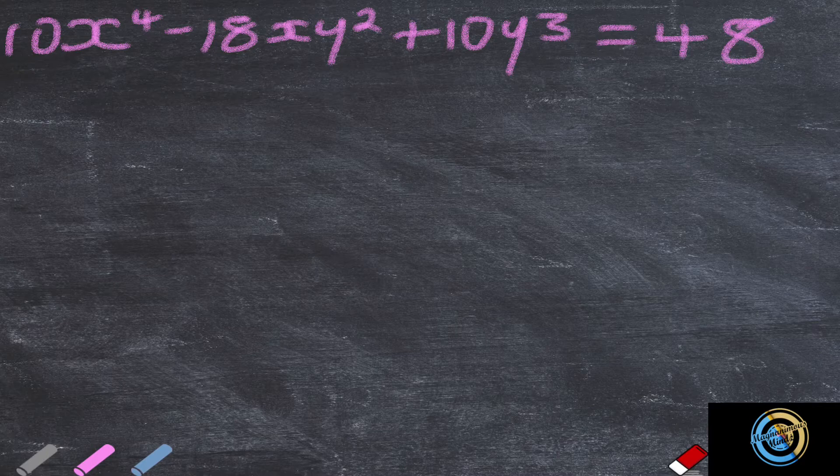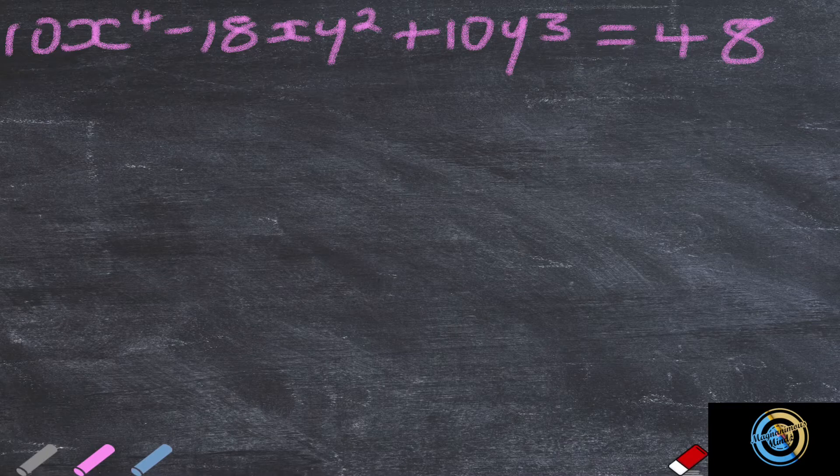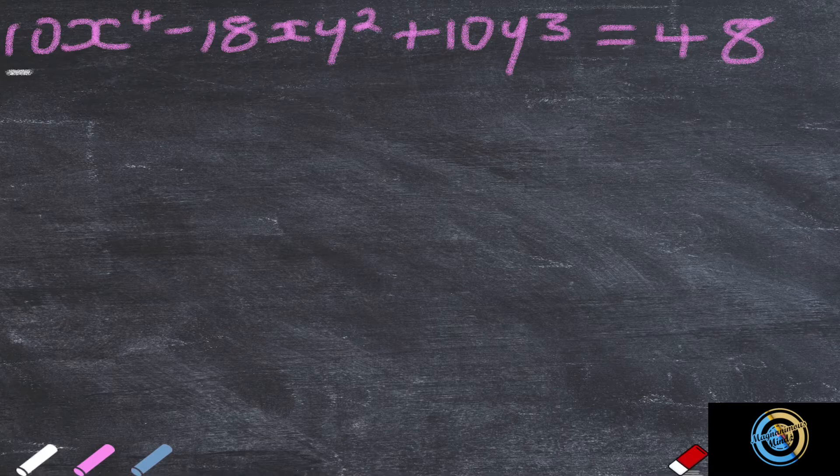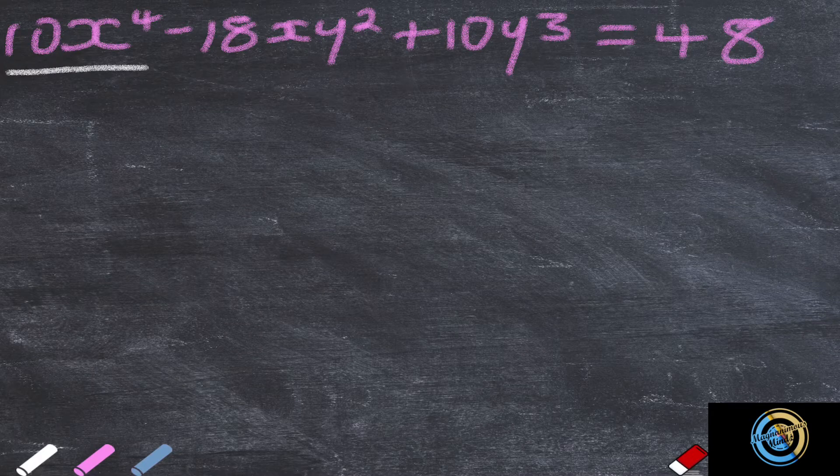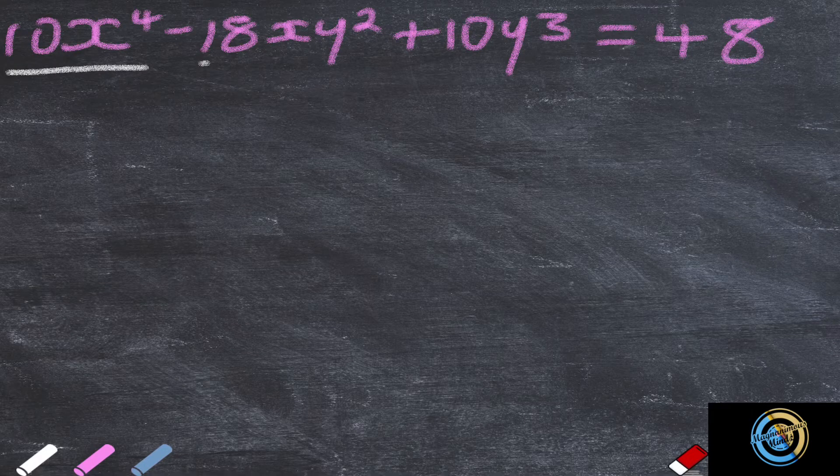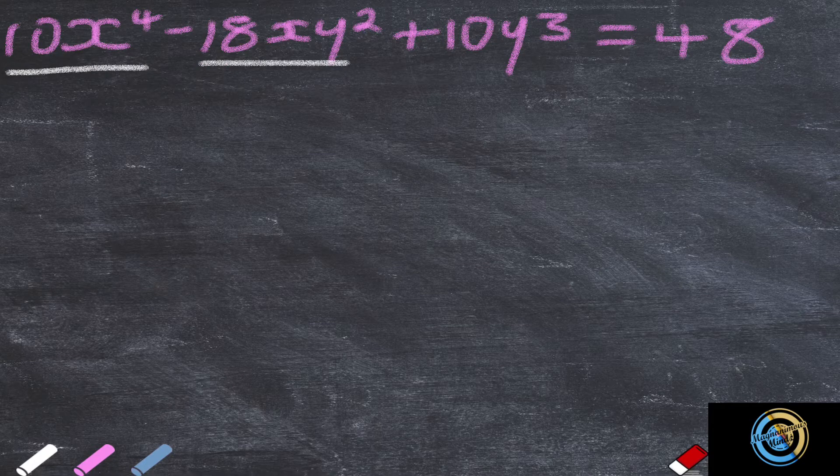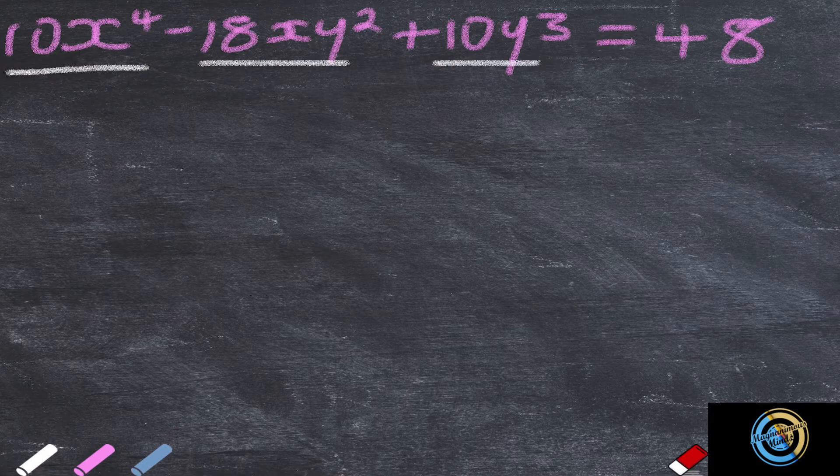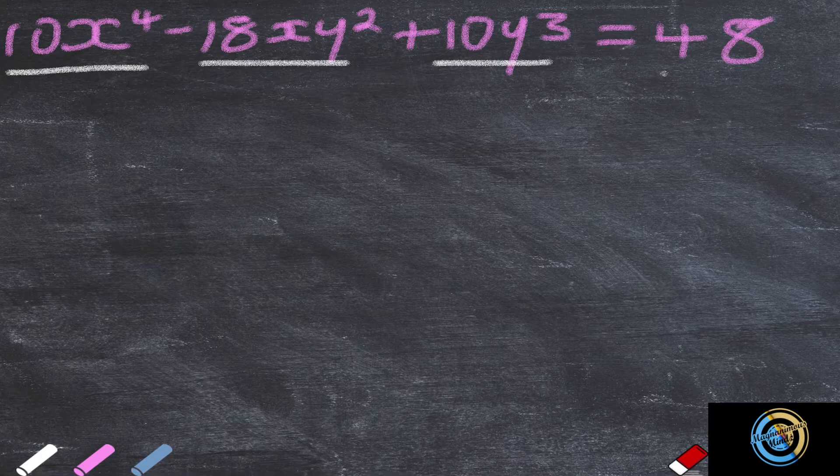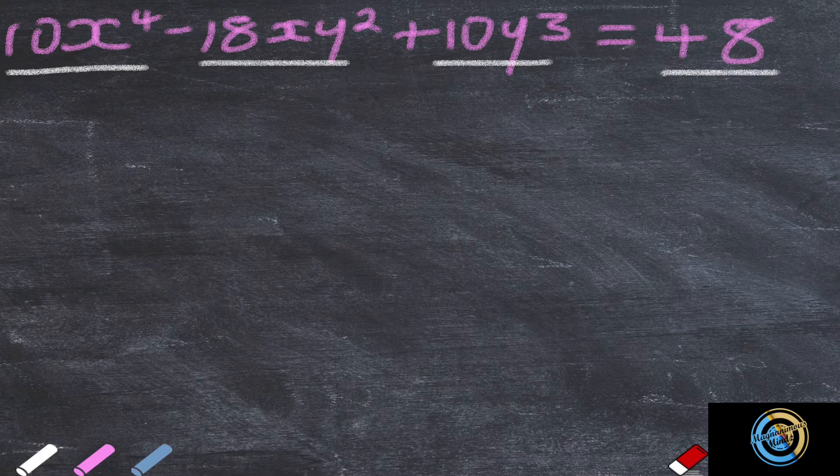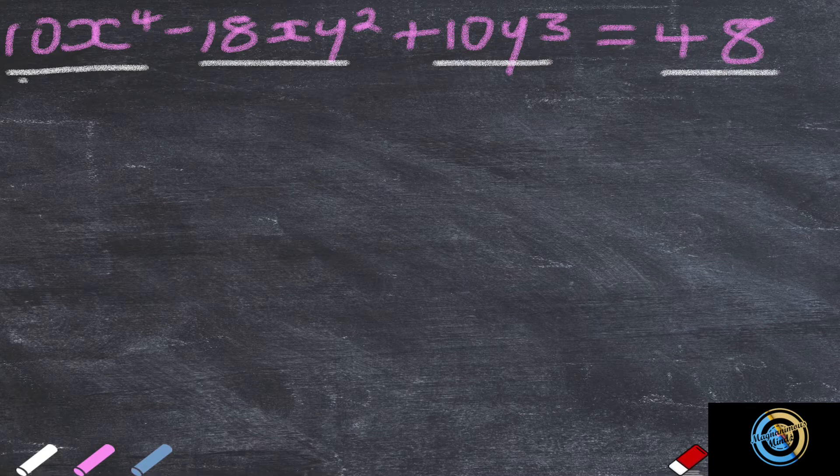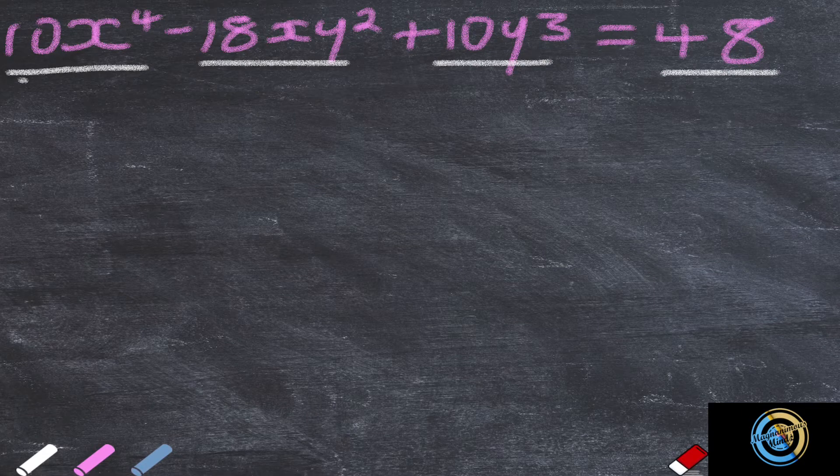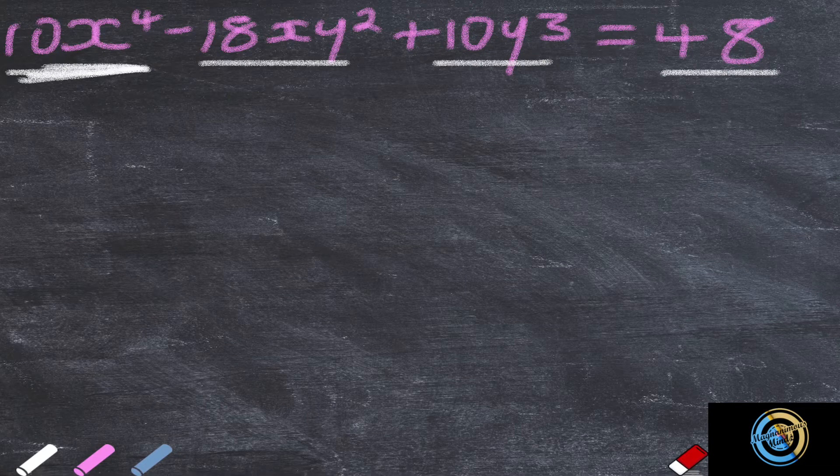So right here we'll start by differentiating 10x to the power 4, and then right here because we've got y and x, we're going to use the product rule. Then we differentiate this and also differentiate that, then make dy over dx subject of the formula. So let's get started.